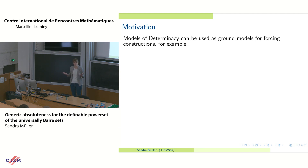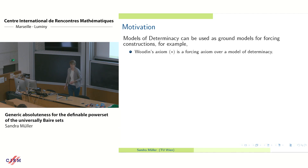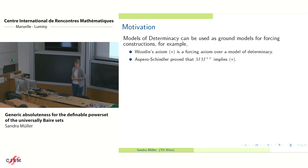So what is the motivation for looking at these kinds of models of determinacy — they call them strong models of determinacy? Well, one of the main motivations is that these models can be used as ground models for forcing constructions that are in some sense more powerful than forcing over large cardinals. For example, one of the first things considered in that direction was Woodin's axiom star as a forcing axiom over a model of determinacy, and as we learned recently, Aspero and Schindler proved that this is connected to the standard forcing axioms — MM double plus implies star, for example.